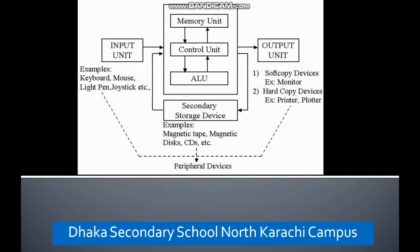This is a block diagram of the CPU. We input data from input devices such as a keyboard, mouse, and others. The Central Processing Unit processes this data, and the output unit provides either a soft copy or a hard copy.